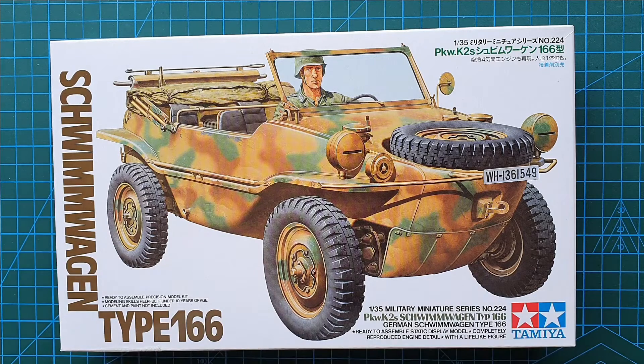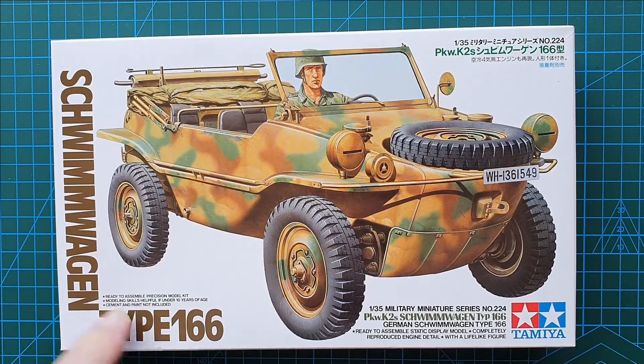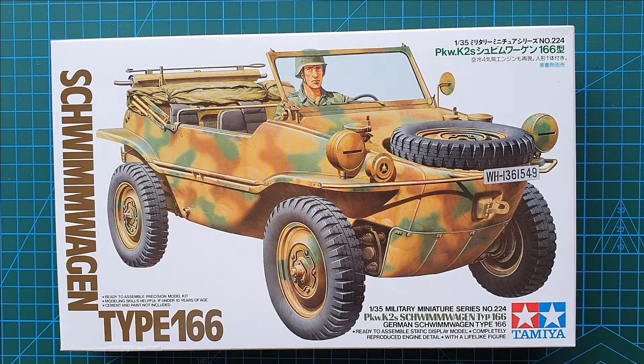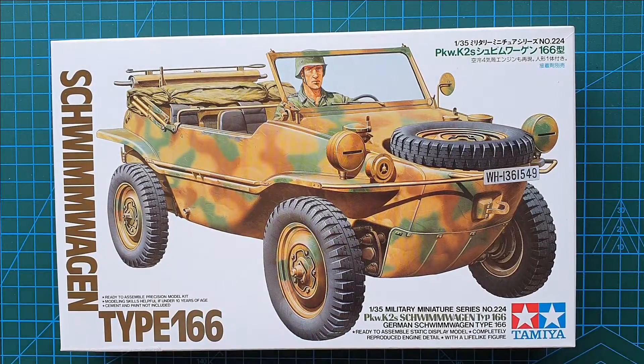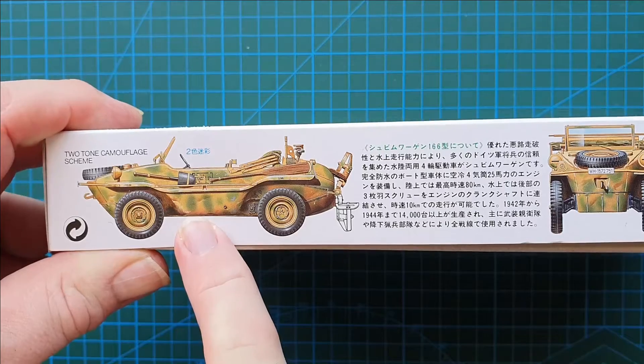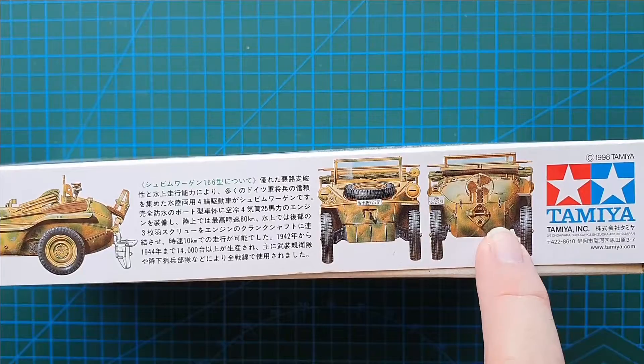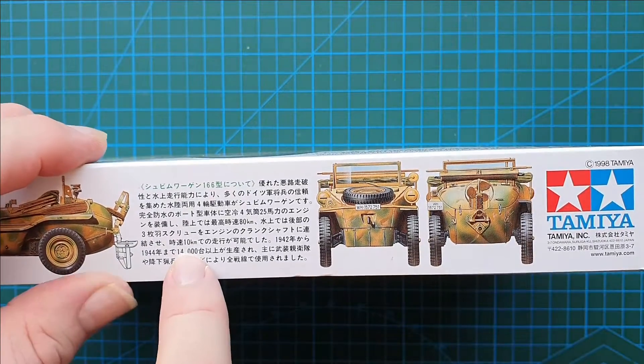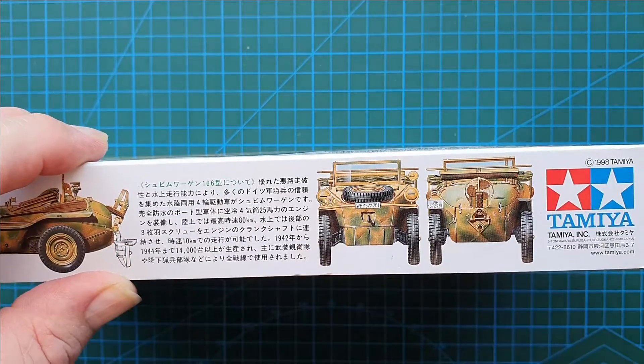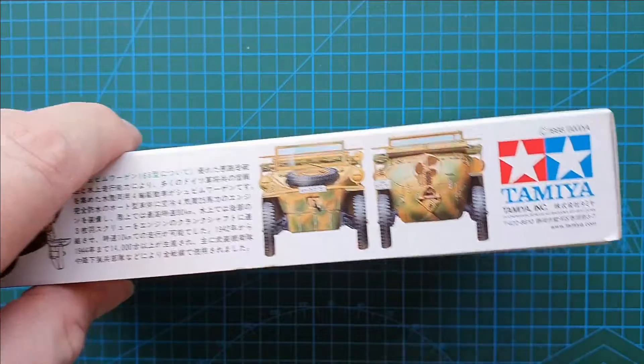All right, so there's your cover. Nice little box art, usual standard white background. Tamiya military miniatures all get just a plain white background. Let's have a look at the rest of the box. So two-tone camouflage scheme, overall dark yellow and green, three views of it. This I suspect is just in Japanese, probably just a brief history.